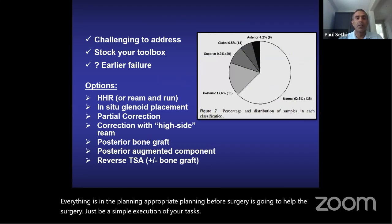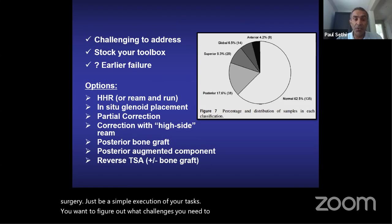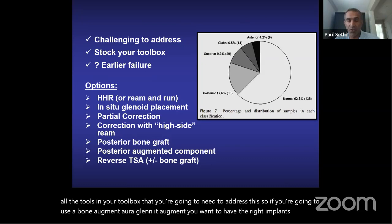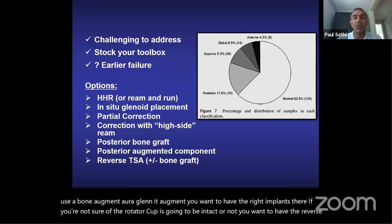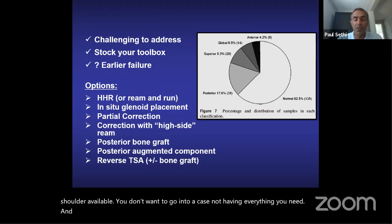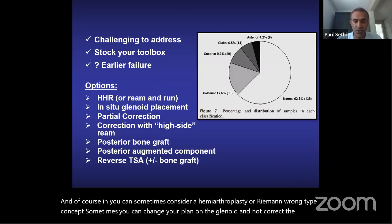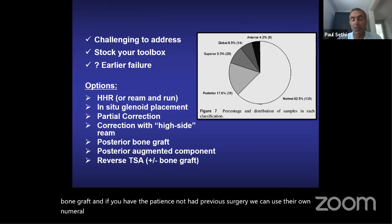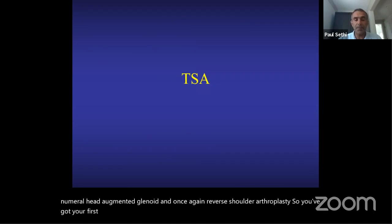Pre-op planning is everything. Appropriate planning before surgery makes the surgery a simple execution of your tasks. Figure out what challenges you need to address and make sure you have all the tools in your toolbox. If using a bone or glenoid augment, have the right implants available. If you're unsure whether the rotator cuff is intact, have the reverse shoulder available. In your toolbox, also consider hemiarthroplasty or a ream-and-run concept, partial version correction with high-side reaming, bone graft options using the patient's own humeral head, and reverse shoulder arthroplasty.